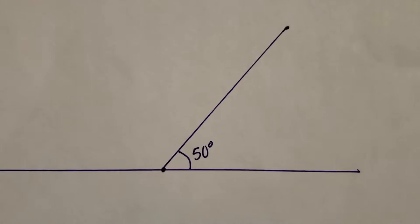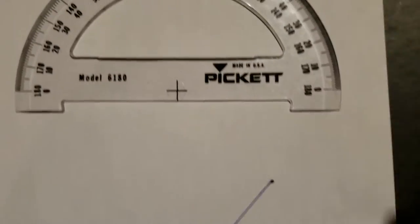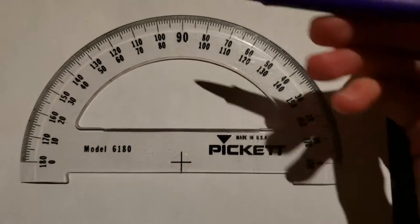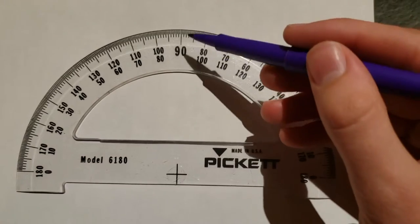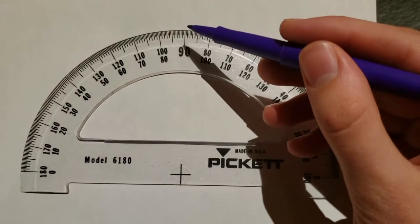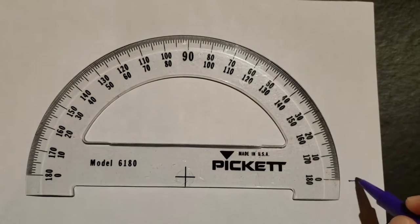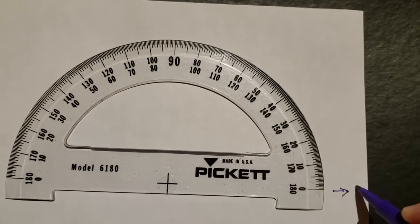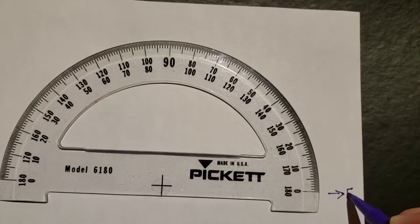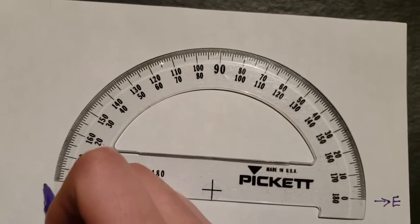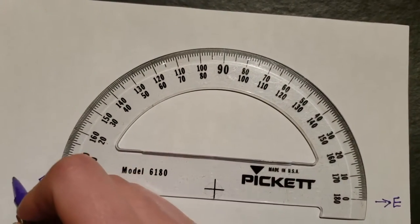Some people that make sundials like to just use a protractor. They'll measure 90 degrees to point north, and then this would point east, and this would point west.